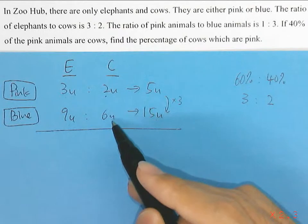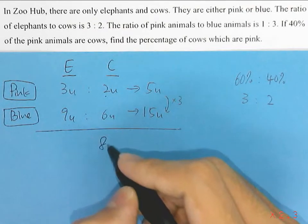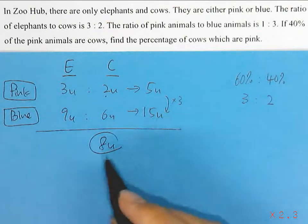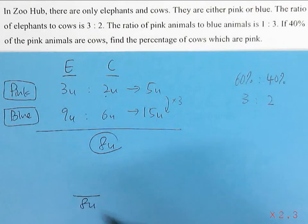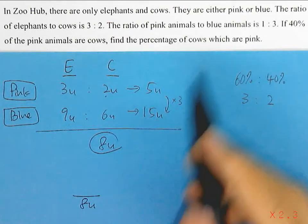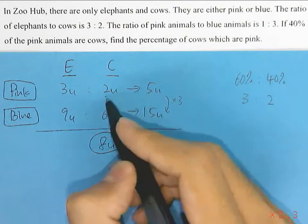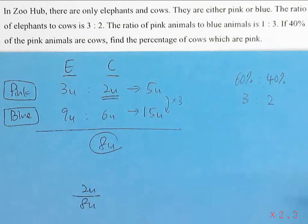That will give us a total of 8 units of cows. So out of this 8 units, we are interested in the pink cows, which is 2 units.